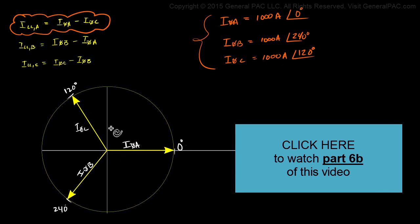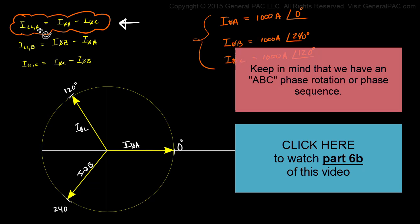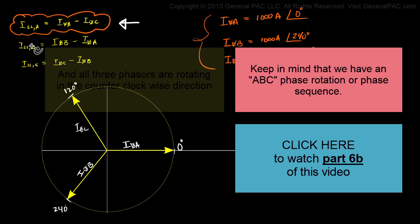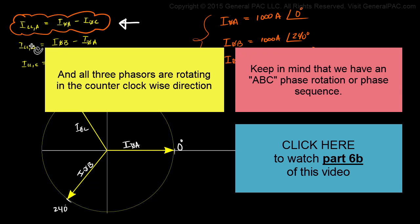We're going to take these phasors and subtract phase A current minus phase C current, and then look at what our line current A looks like.